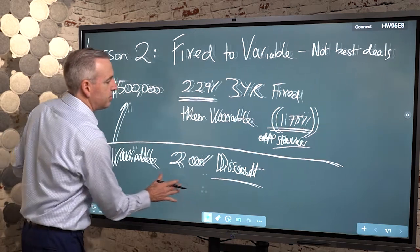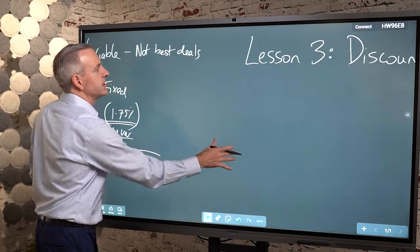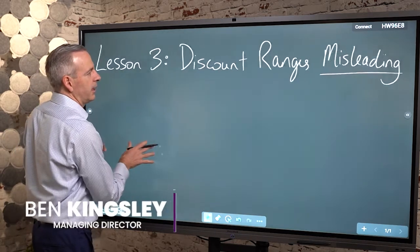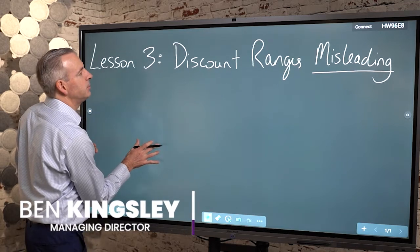Okay, let's head to lesson number three. This lesson is all about discount ranges and how they can be misleading.